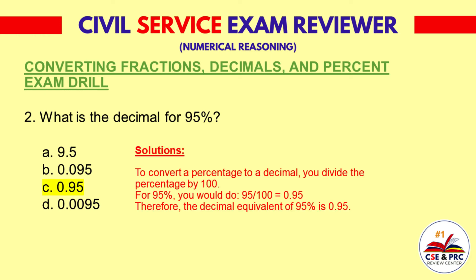Solutions: To convert a percentage to a decimal, you divide the percentage by 100. For 95%, you would do 95 divided by 100, which equals 0.95. Therefore, the decimal equivalent of 95% is 0.95.